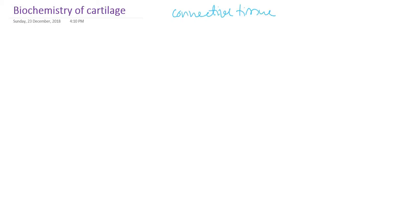Welcome to this presentation on the biochemistry of cartilage. We studied bone, which is a mineralized connective tissue. Similarly, cartilage is also a connective tissue, and you should remember that cartilage is avascular — there are no blood vessels in the cartilage. Since it is avascular, it derives its nutrients from adjacent tissue or from synovial fluid.